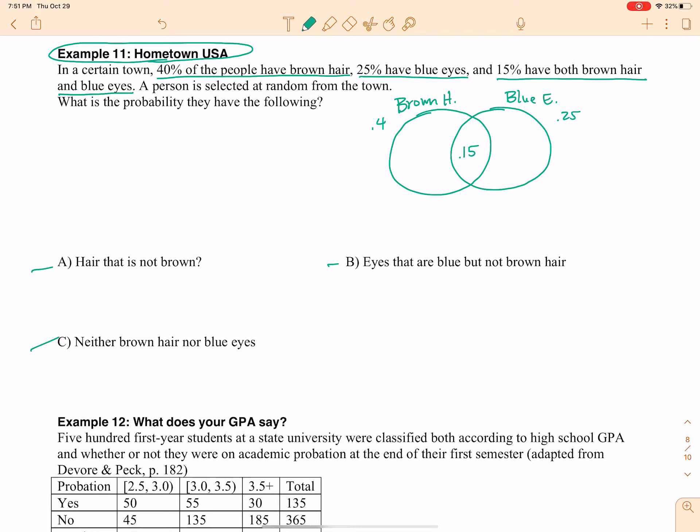15% have both. So, 15% goes in the middle, and then just brown hair is 0.4 minus 0.15, which gives me 0.25. And then the people who have blue eyes, just blue eyes, 0.25 subtract 0.15, which is 0.1. Okay, so I can use my Venn diagram here.